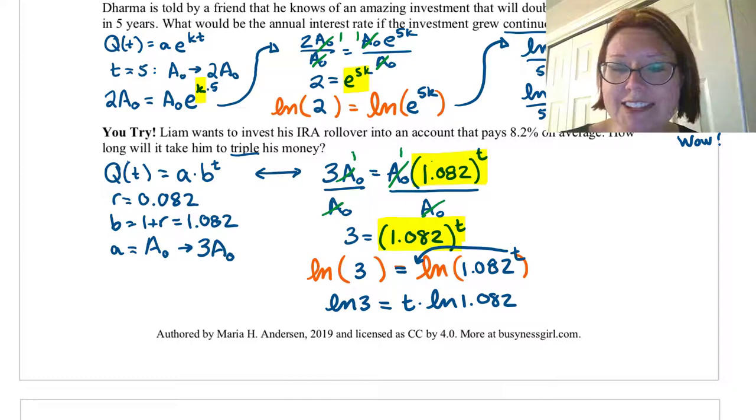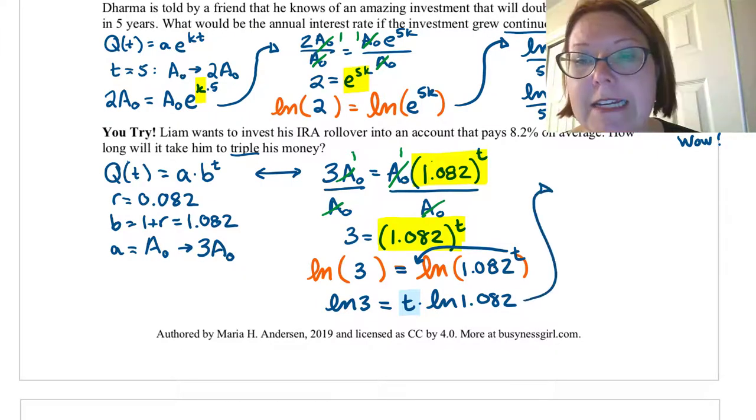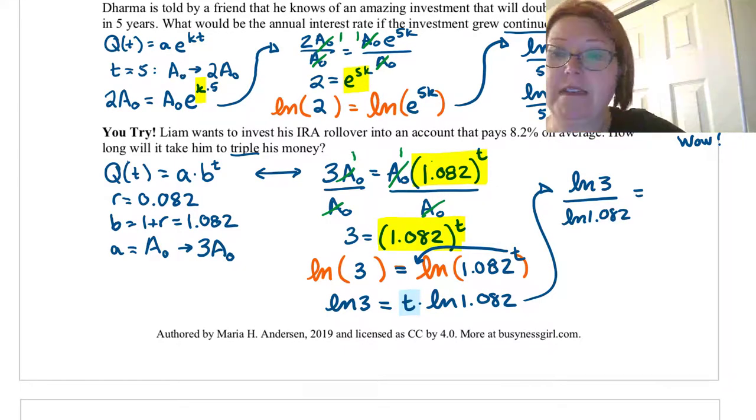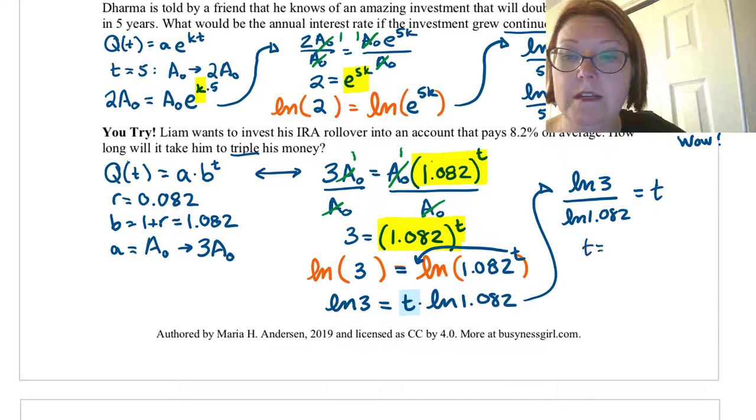Finally, to isolate that t, we just need to divide both sides by natural log 1.082. This gives us natural log of 3 divided by natural log of 1.082 equals t. And doing that evaluation, we get t equals 13.94 years.